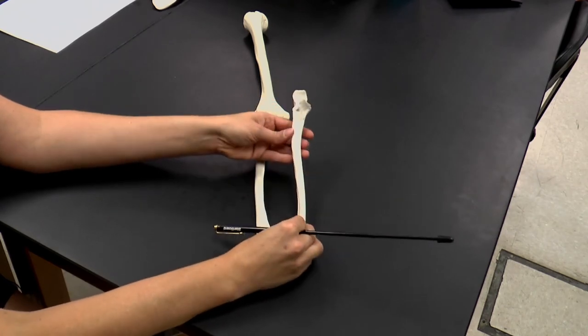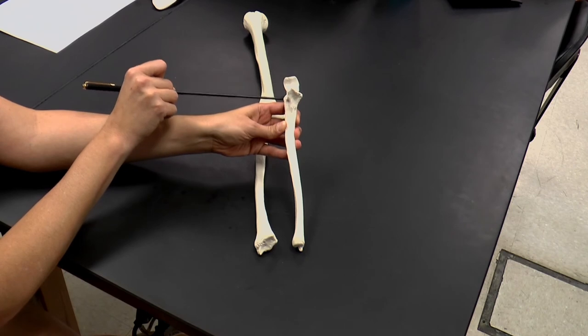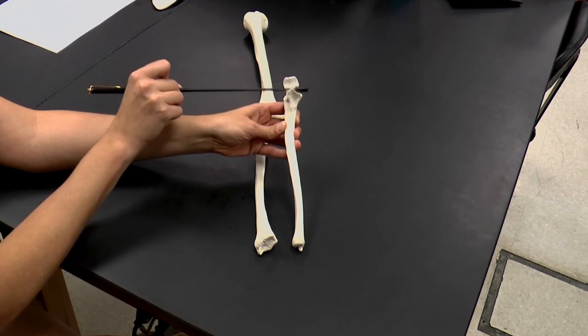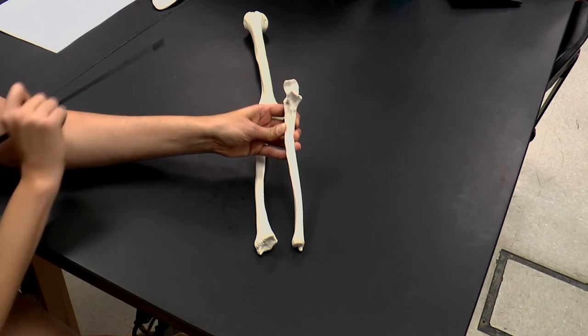I'm going to rotate it back. And again, here you can see the tip of that olecranon process and the trochlear notch that articulates with the trochlea of the humerus to enable my elbow to bend and straighten.